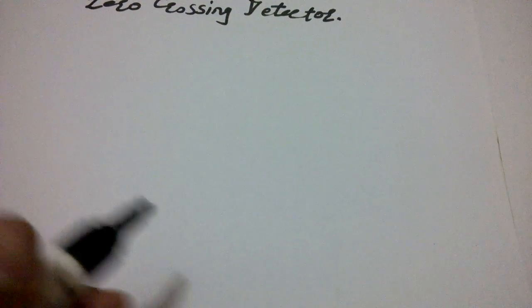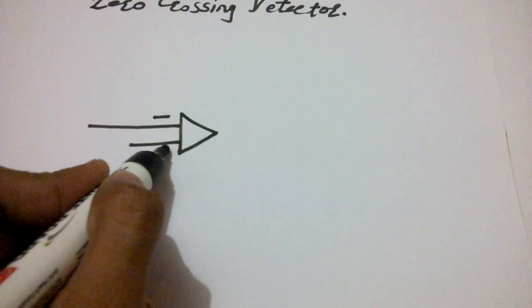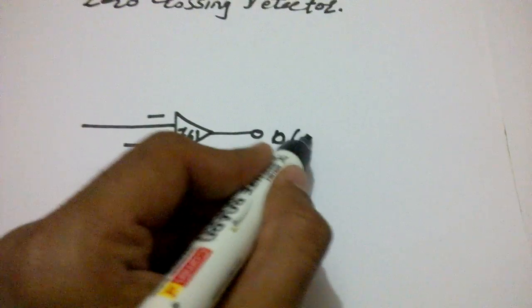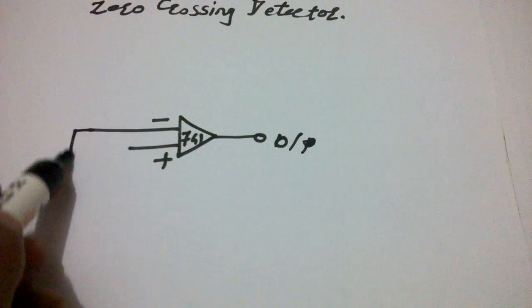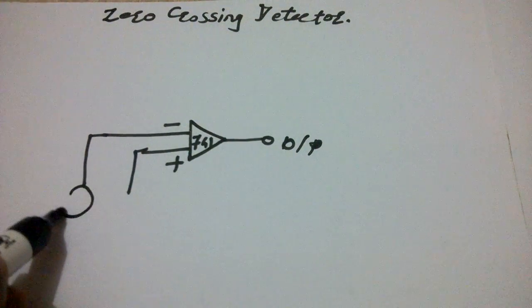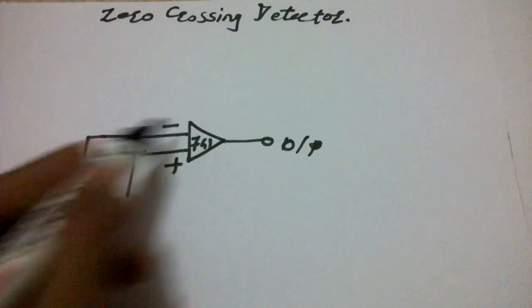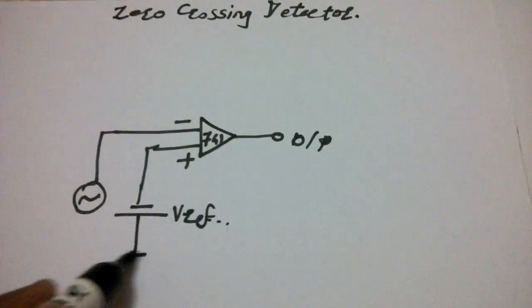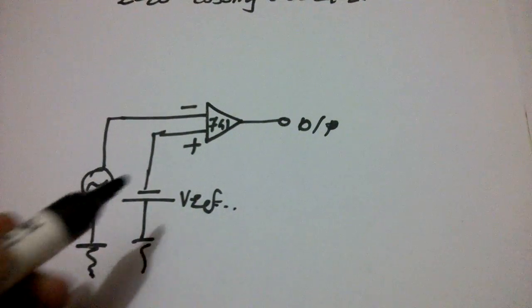Hello friends, now we are going to discuss the zero crossing detector. The zero crossing detector is also an immediate application of the basic comparator which we learned in the previous lecture. For the basic comparator, we draw one op-amp with the inverting terminal, the positive terminal that is the non-inverting terminal, and the output. For this system, I want to provide the input voltage to the inverting terminal, and the V reference is provided to the non-inverting terminal, which is connected to ground.